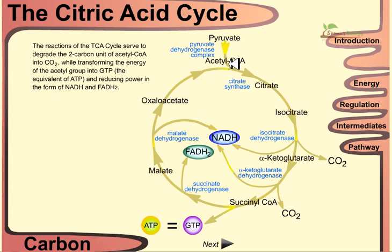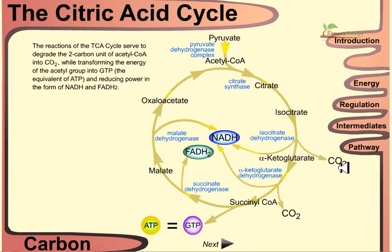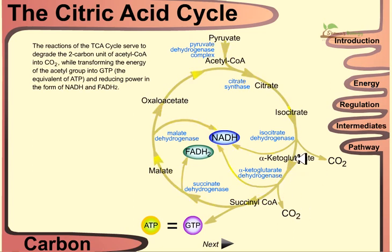Pyruvate is converted to acetyl-CoA via the pyruvate dehydrogenase complex. Acetyl-CoA is converted to citrate via citrate synthase. Citrate is converted to isocitrate via isomerase. Isocitrate is converted to alpha-ketoglutarate via isocitrate dehydrogenase, and carbon dioxide is released. Alpha-ketoglutarate is converted to succinyl-CoA via the alpha-ketoglutarate dehydrogenase; NAD+ is involved, NADH is produced, and carbon dioxide is released. These two consecutive decarboxylation steps both release CO2.